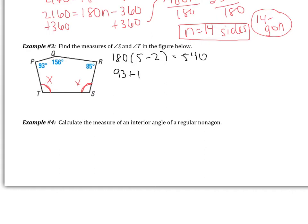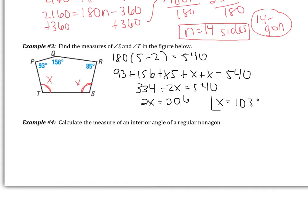Now I add them up and I set them equal to 540. So 93 add 156, add 85, add X, add another X equals 540. And now I'm going to simplify. On the left side, I have 334 add 2X equals 540. If I subtract 334, I get 2X equals 206. And so X is 103 degrees. Therefore, angles S and T are 103 degrees. And we better just make sure we answer that. The measure of angle S is 103 degrees. The measure of angle T is also 103 degrees.